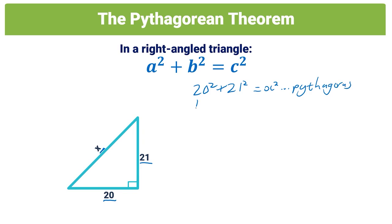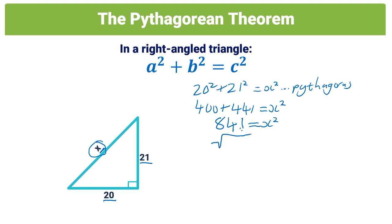We write 20² + 21² = x² (reason: Pythagoras). 20² is 400, 21² is 441, and 400 + 441 = 841 = x². We don't want x², we want x, so we square root both sides. The square root of 841 is 29, so x = 29.